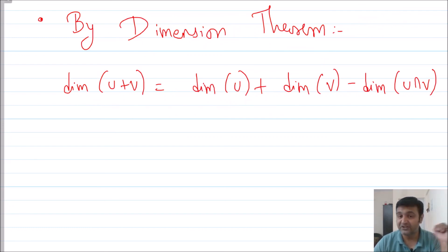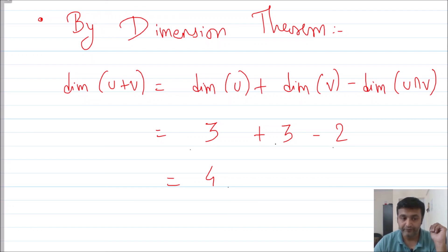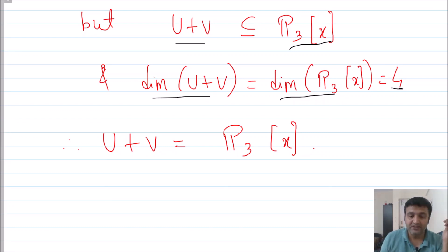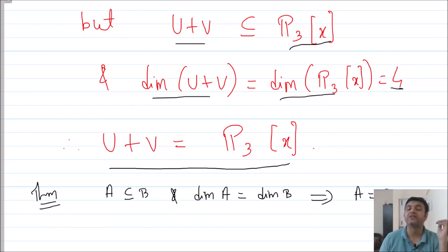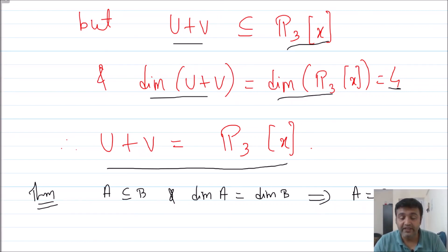For U+V, we use the dimension theorem: dim(U+V) = dim(U) + dim(V) − dim(U∩V) = 3 + 3 − 2 = 4. Since U+V is a subspace of P3(x) and dim(P3(x)) = 4 as well, and there is a theorem that if a subspace has the same dimension as the whole space, they must be equal, we conclude U+V = P3(x). The basis for U+V is {1, x, x², x³}, and the dimension is 4.